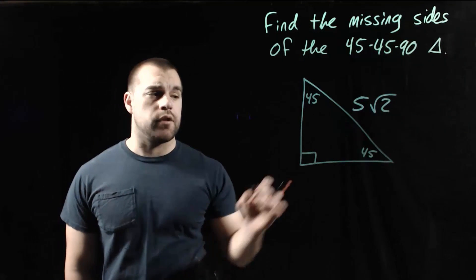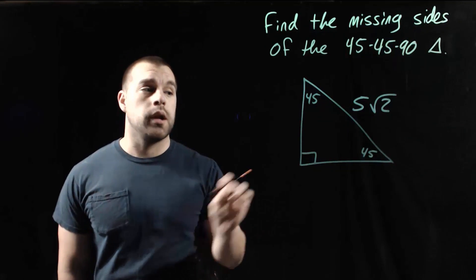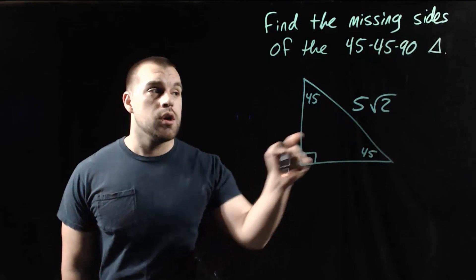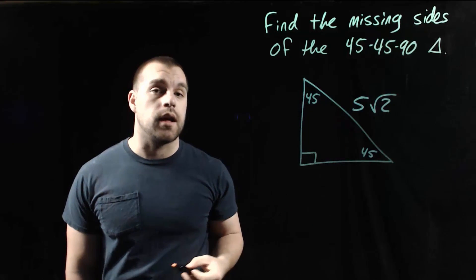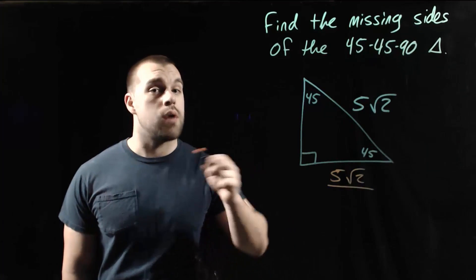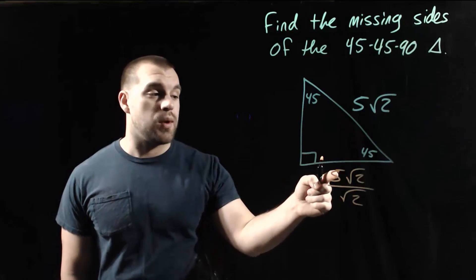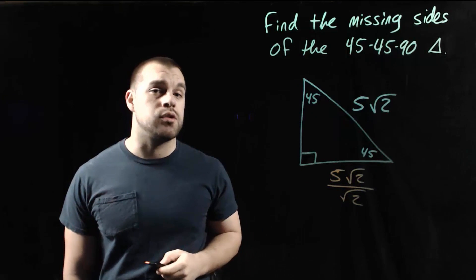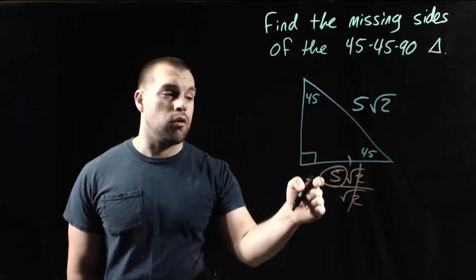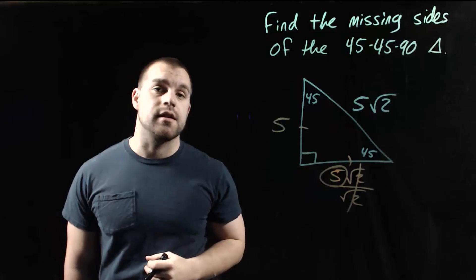This example is a little different — we're given the length of the hypotenuse and we want to find the length of the legs. Normally going from leg to hypotenuse we multiply by the square root of 2, but we're going the opposite direction, so we divide by the square root of 2. We have 5 root 2 divided by root 2; those root 2s cancel each other out, leaving us with 5. So the length of both legs is 5, since this is an isosceles triangle.